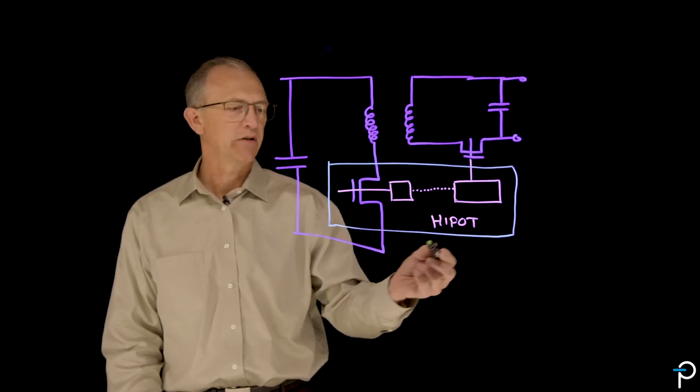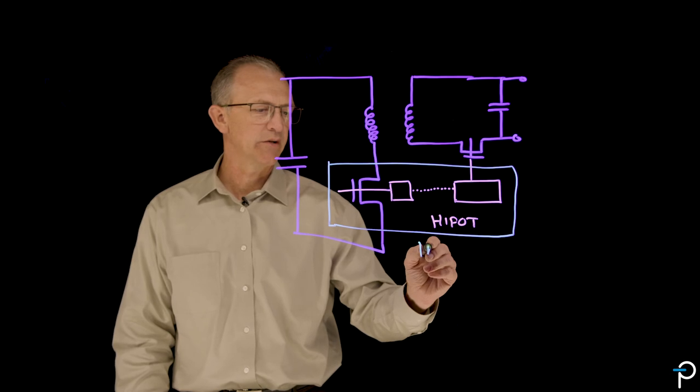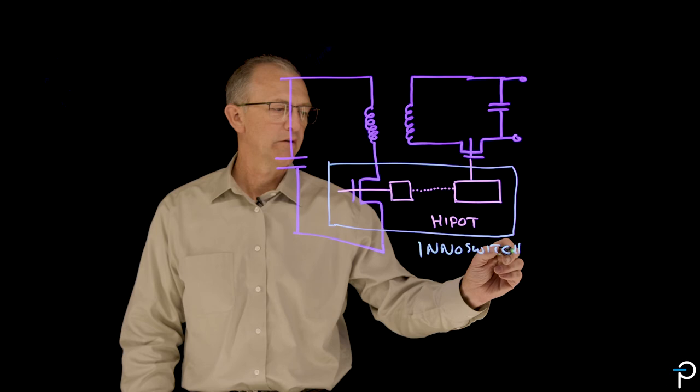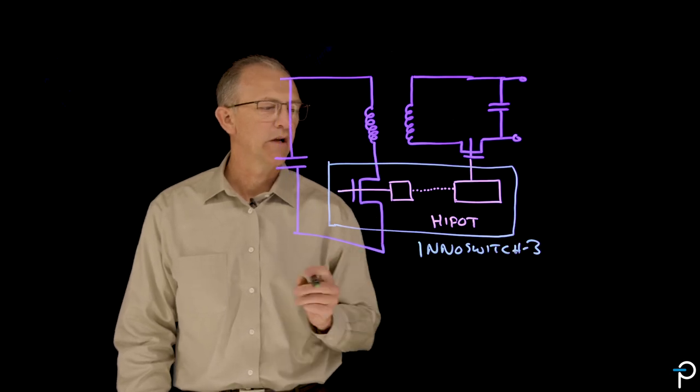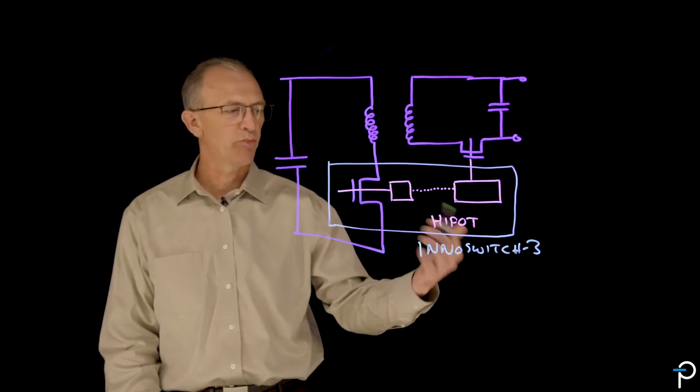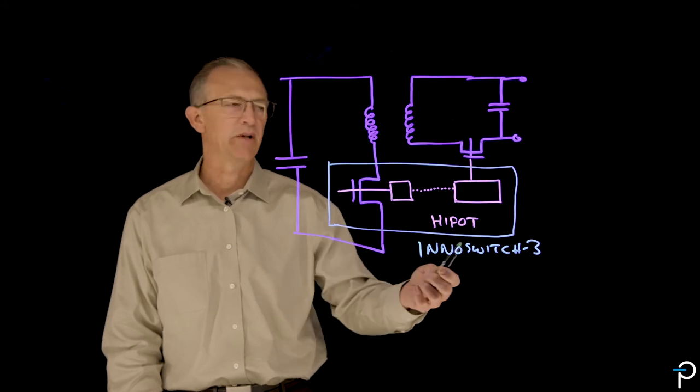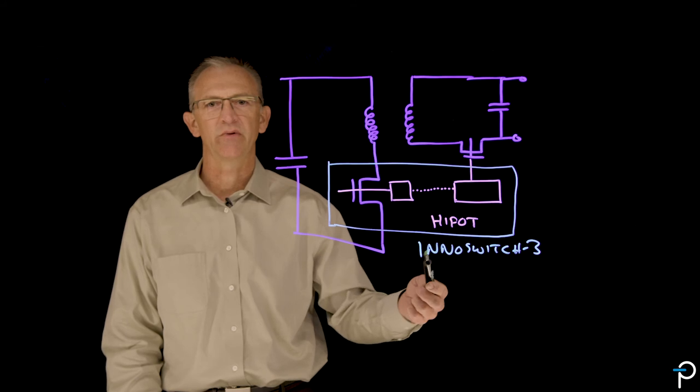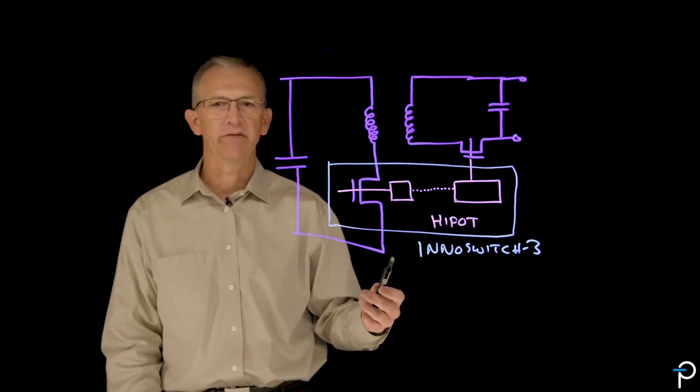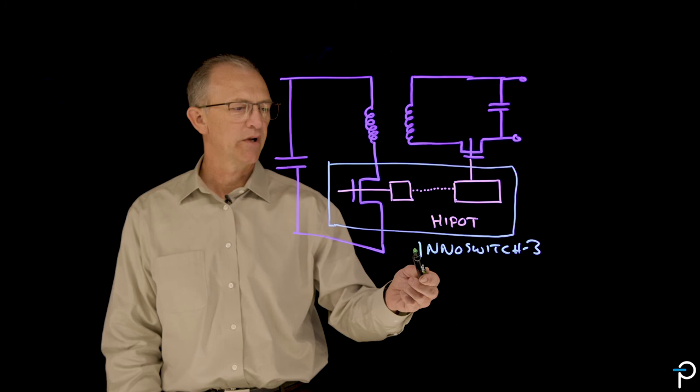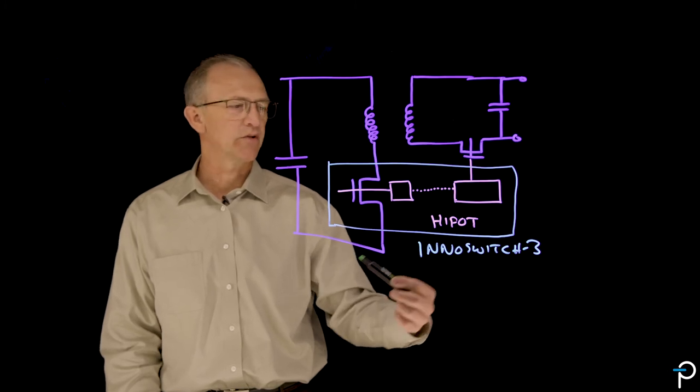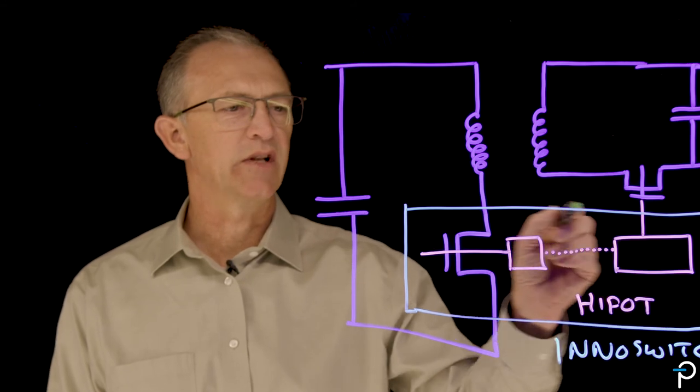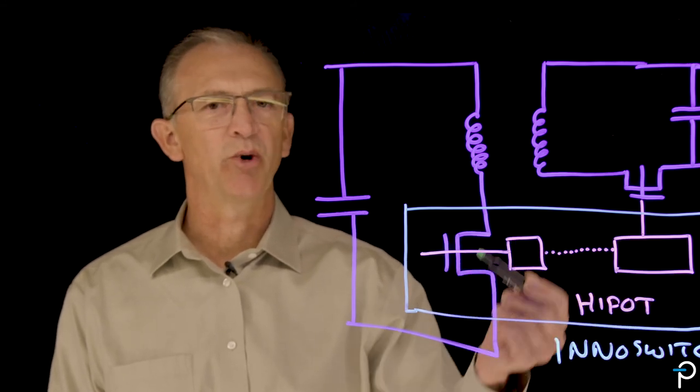And so our solution has been the InnoSwitch, InnoSwitch3 product line that includes the Pro and other InnoSwitch3 family members. We have a multiple output version called InnoSwitch3-MX, and we have a version for LED lighting called LitSwitch-6. And all of those family members use the gallium nitride in the same way for the same purpose.